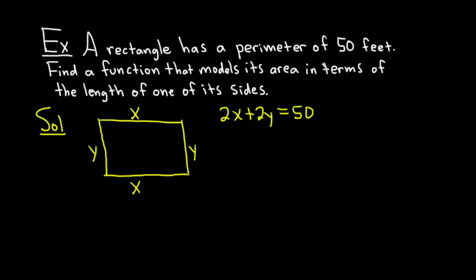So that's what the first sentence tells us. The question wants us to find a function that models its area in terms of the length of one of its sides. So the area, we'll call it A, is going to be equal to x times y. That's the length times the width. However, this is a function of two variables. We want it to be in terms of the length of one of its sides. So what we can do is we can take this top equation here and we can solve it for, let's say, y.